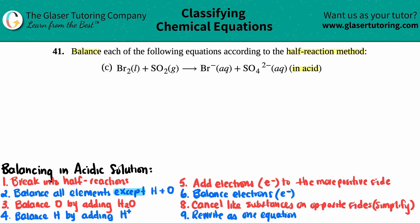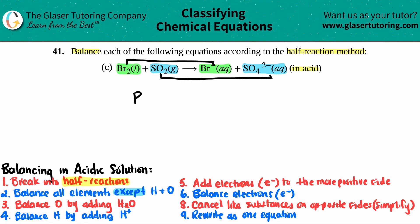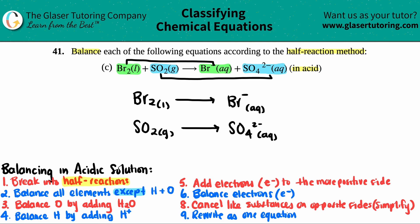The first thing we have to do is break the whole equation into two half reactions — pick the elements that go together in specific compounds. I have bromine hooking up with bromine, and sulfur with oxygen hooking up with sulfur and oxygen. So: Br₂ liquid yields Br⁻ aqueous, and SO₂ gas yields SO₄²⁻ aqueous. First step done.